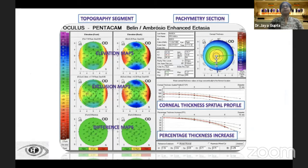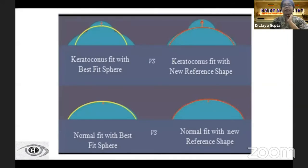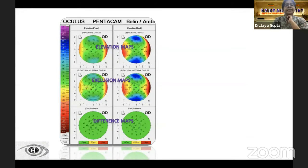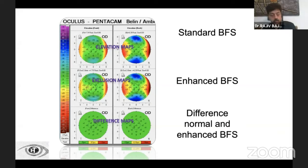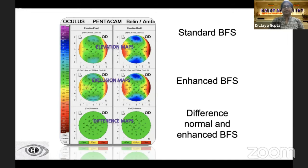Coming to the Belin-Ambrósio display, it can be divided into two segments: the topography segment and the pachymetry section. The topography segment consists of three rows — the first is the elevation map, the second is the exclusion maps, and the third is the difference map. In a keratoconic cornea, the best-fit sphere would steepen, making the cone less obvious. The pachymetry section isolates 3.5 to 4 mm around the thinnest location to create an enhanced best-fit sphere, and the third row shows the difference map between the normal and enhanced best-fit sphere.